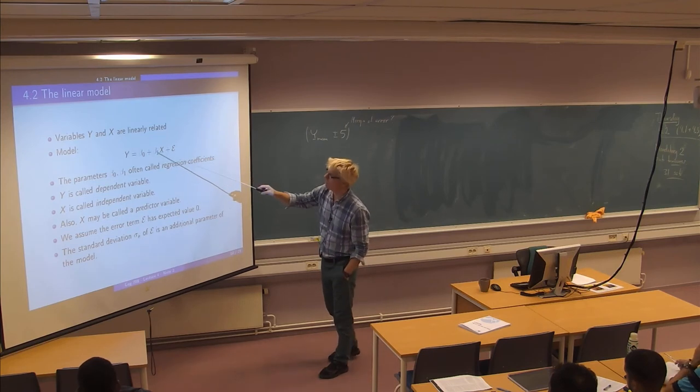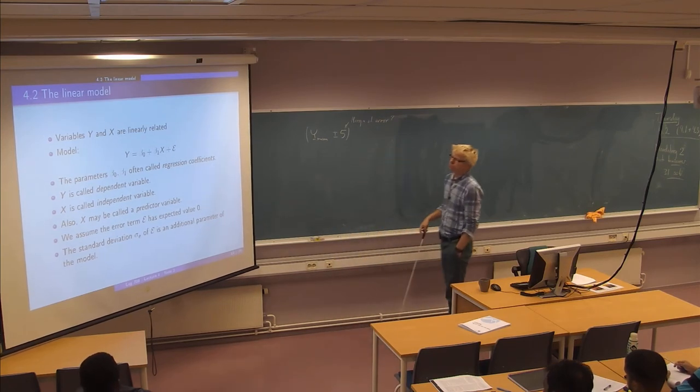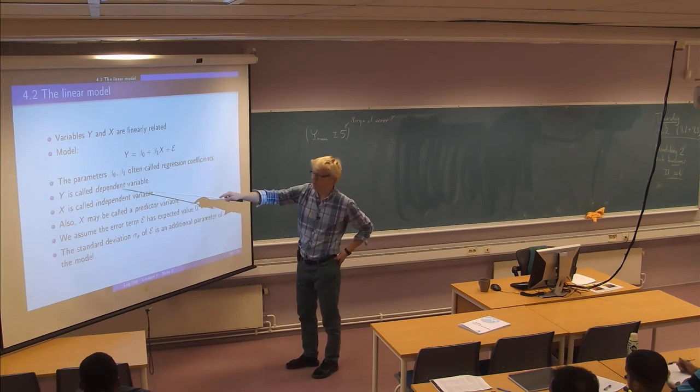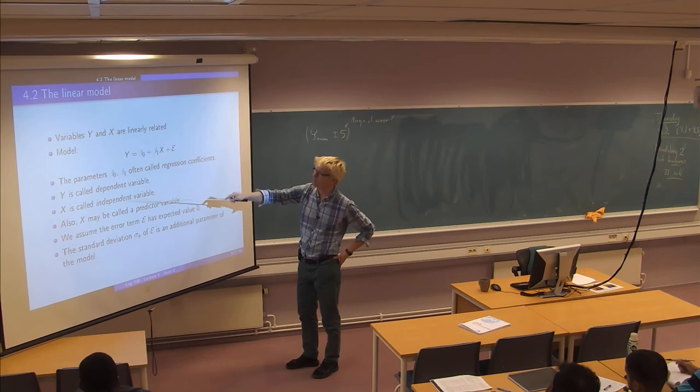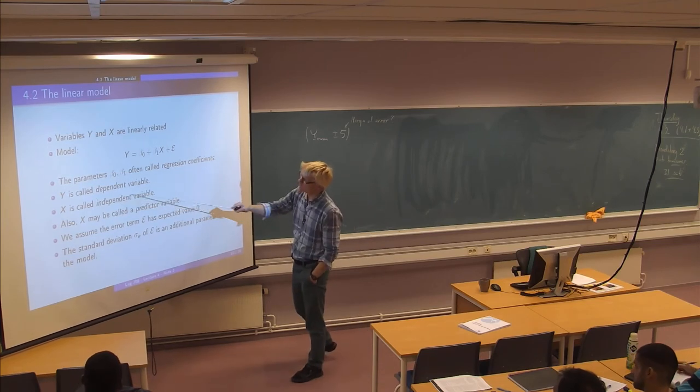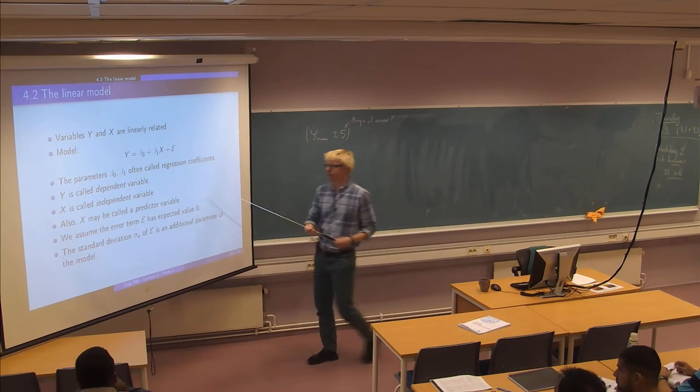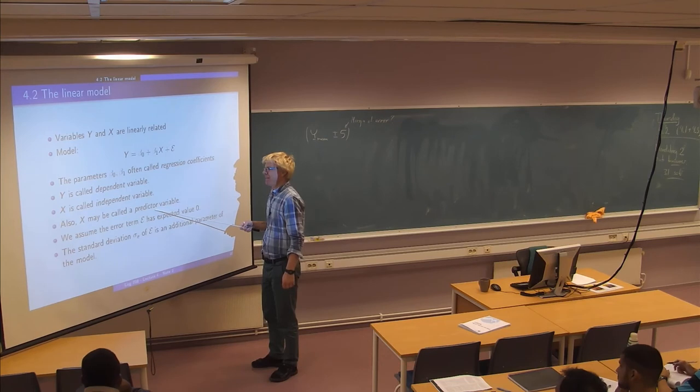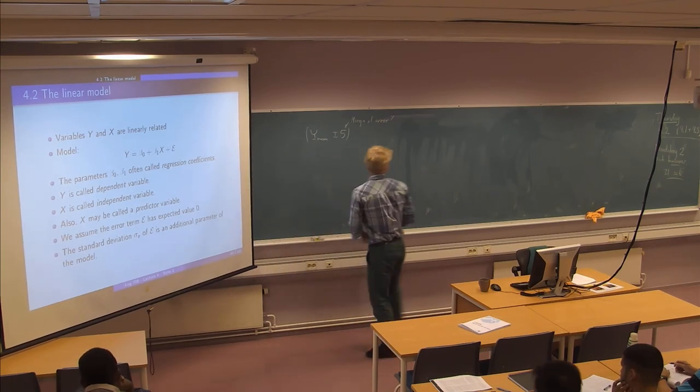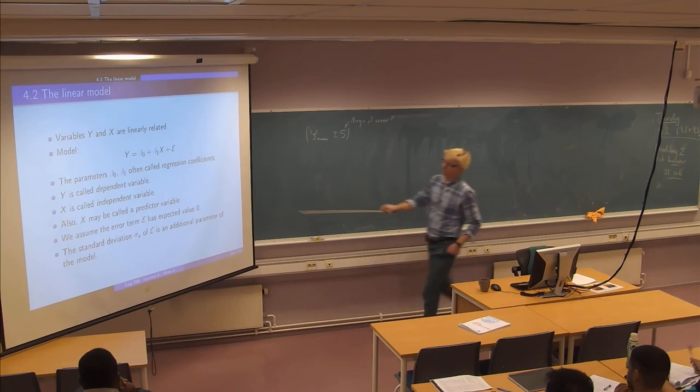So I'm now gonna call the parameters here beta 0 and beta 1. And we call them regression coefficients typically. Some more terminology, we typically call this y the dependent variable. Because we say that y is dependent on x when we write it like this. And then y is the dependent and x is called an independent variable. You will also see sometimes the word predictor variable used for x, which means x can be used for forecasting or predicting y. So we can use the distance in this example to predict the duration. And in that sense we say that x is a predictor for y.